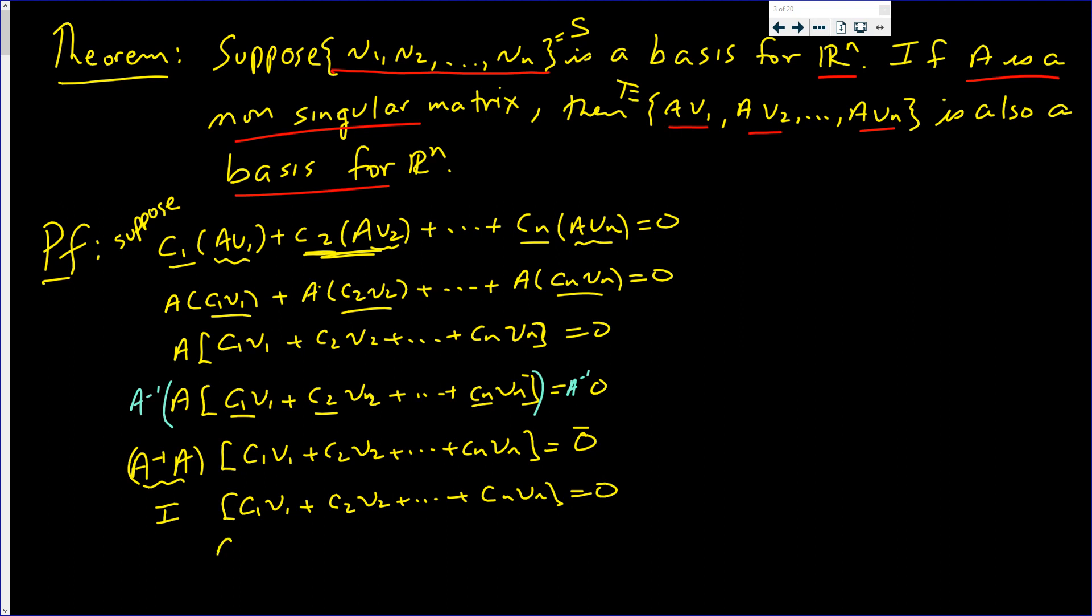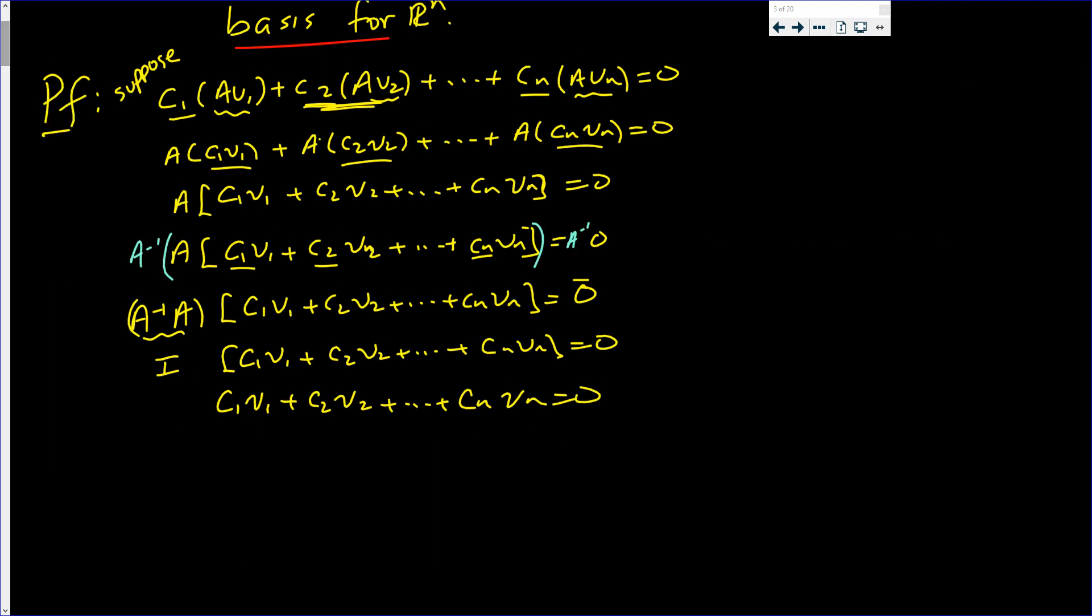Now, identity times what's in the brackets is just what's in the brackets. So, this does equal zero. But that implies that C1 equals C2 equals ... equals Cn. Since S is a basis for R^n, that implies that S is a linearly independent set.